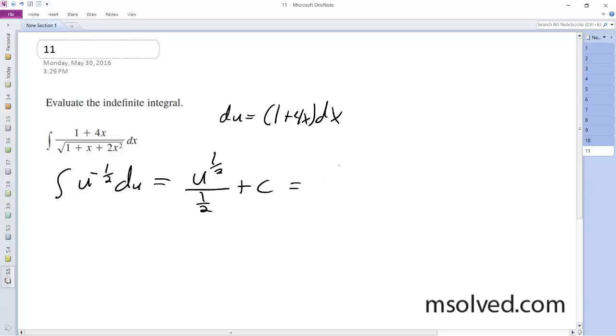And rewriting this, I get 1 half, actually, take that back, this ends up being 2 times quantity 1 plus x plus 2x squared, raised to the 1 half plus c, and that's it, yep.